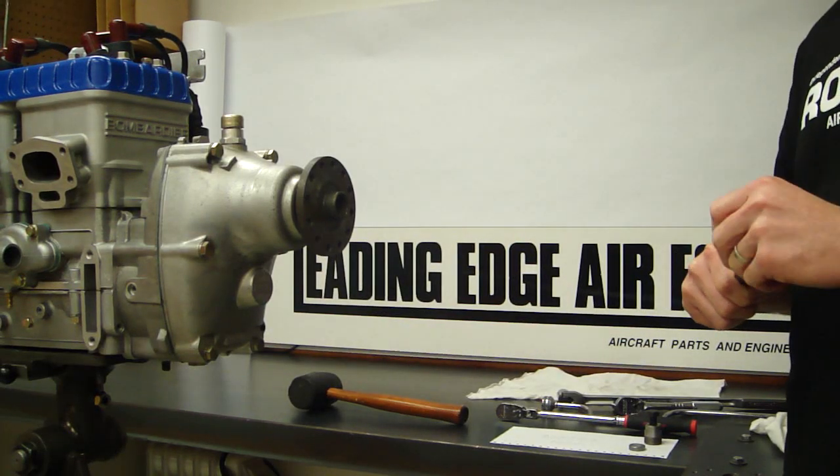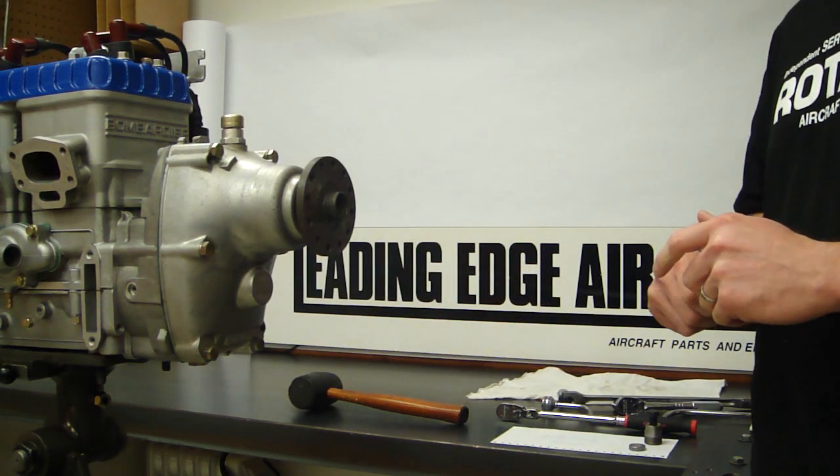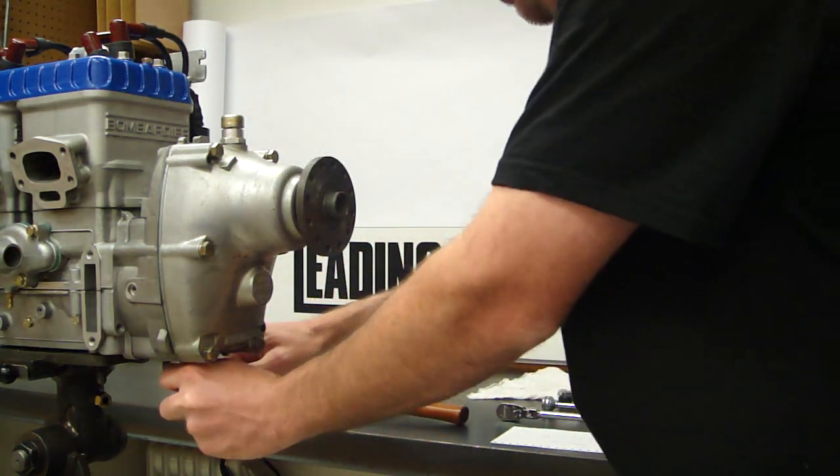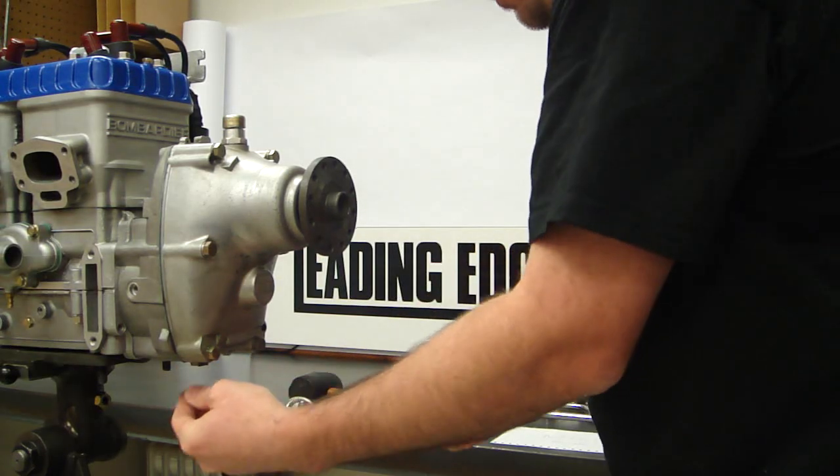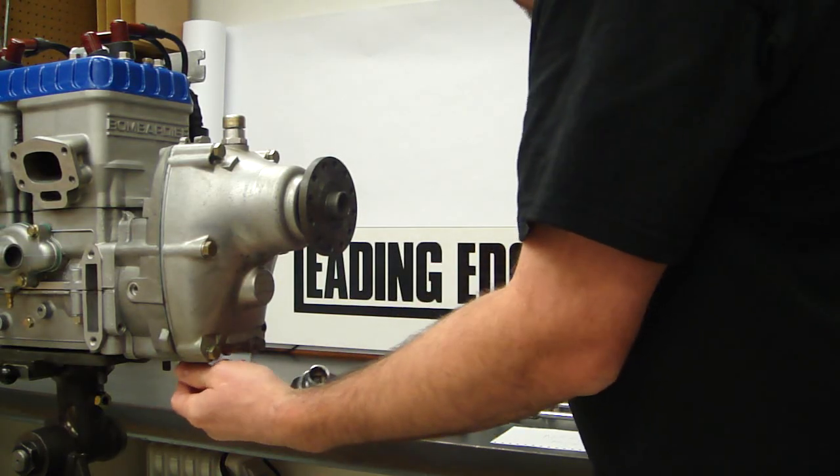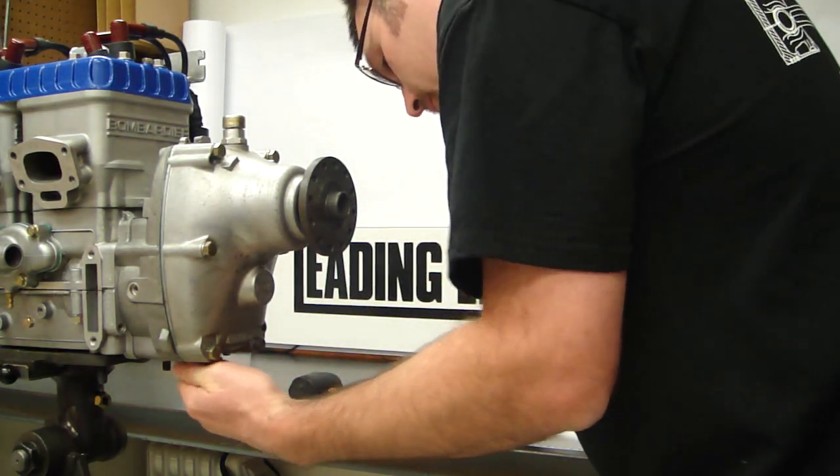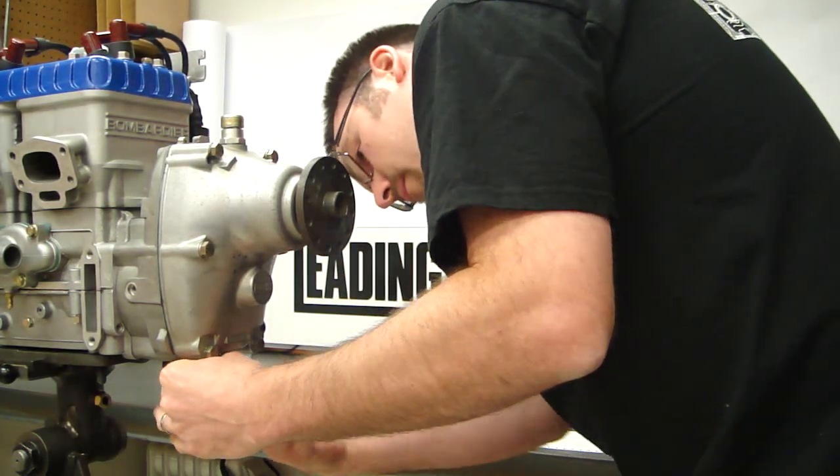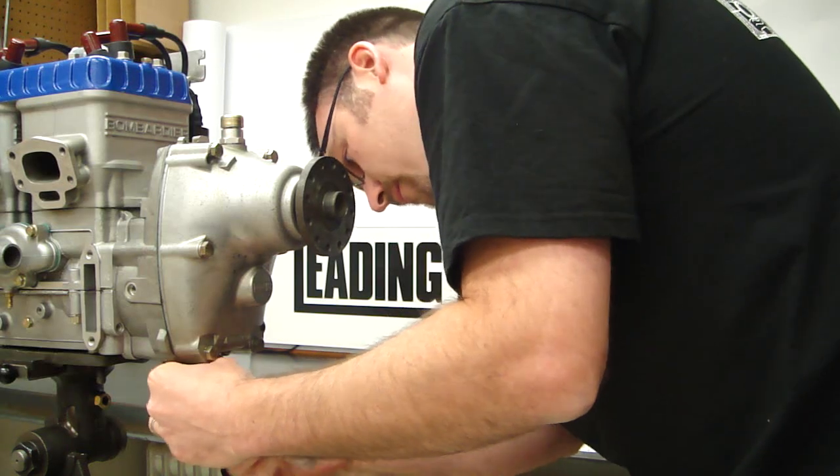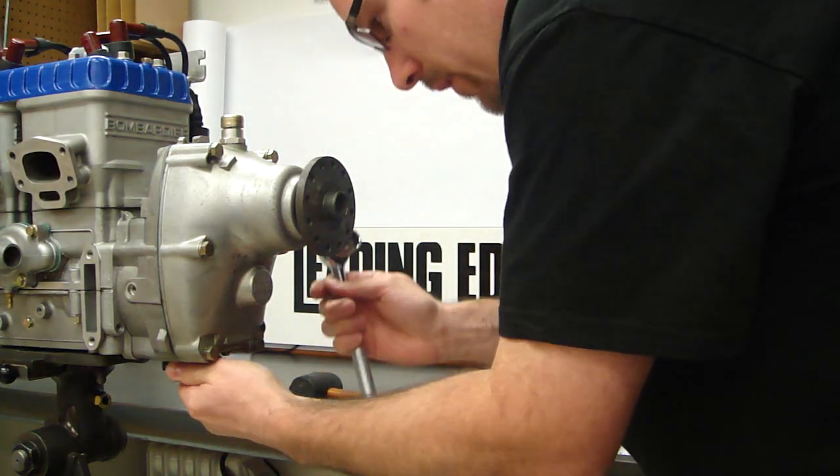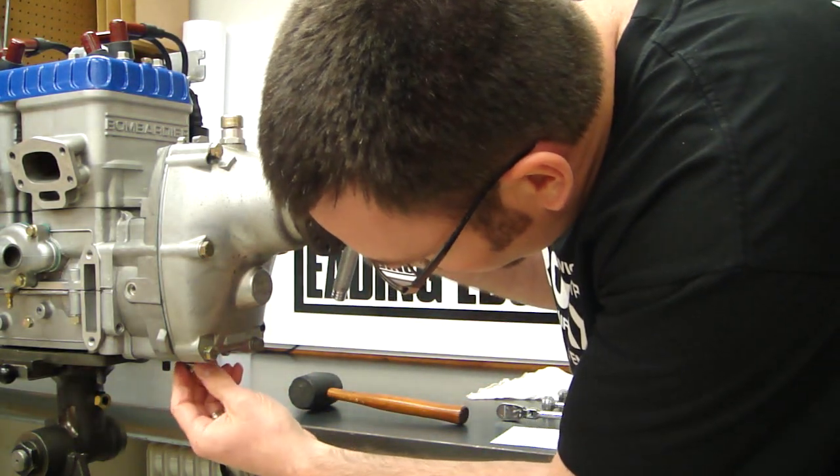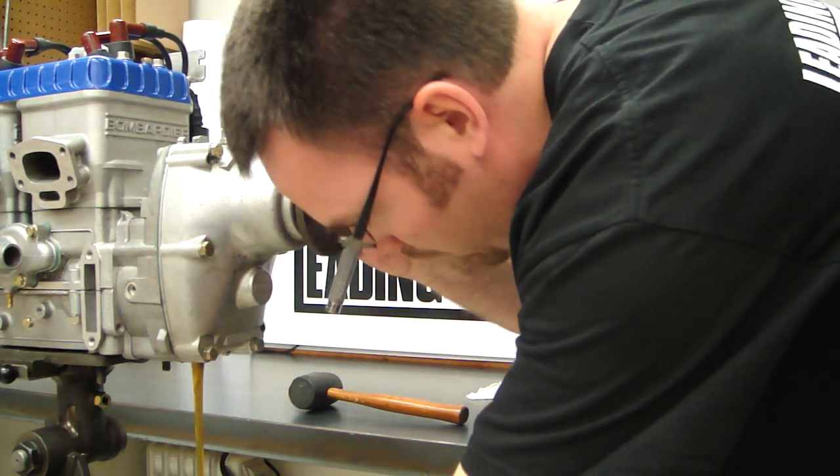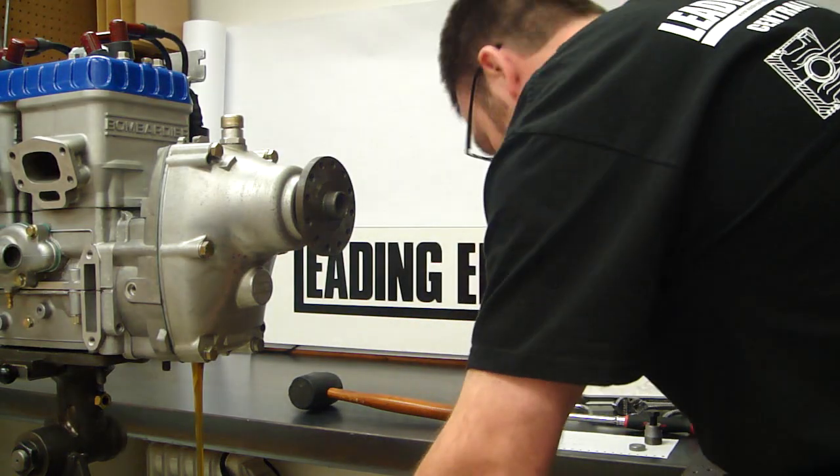Today we're going to show you how to remove a Type-B gearbox from a Rotax 2-cycle aircraft engine. The first step would be to remove the magnetic drain plug from the bottom of the gearbox using a 17mm socket. Let the drain plug come out with the sealing gasket and drain the gear lube into an appropriate container.